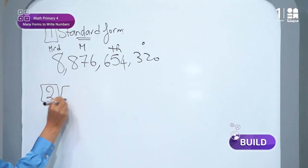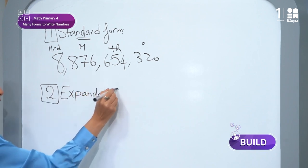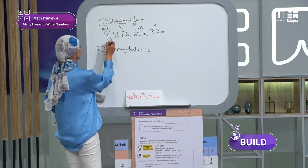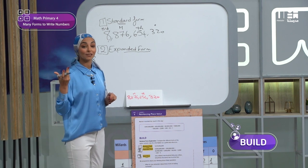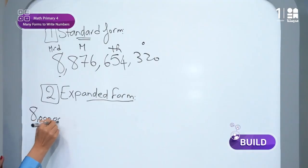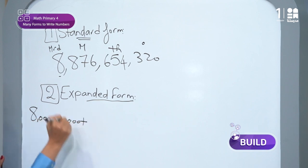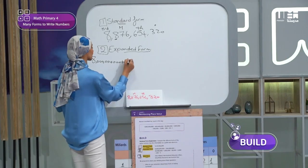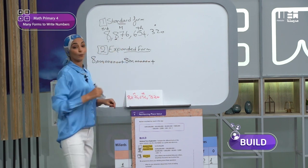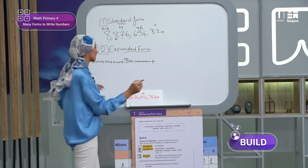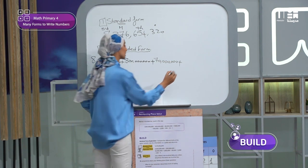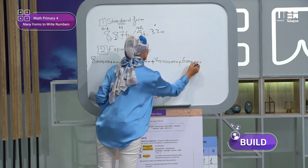Second form is expanded form. How can I write the expanded form? Yes, I will write each digit alone with its value. The first digit, eight milliard, so I will write eight, and beside it, how many zeros? Yes, nine zeros, and don't forget to put the commas. Eight milliard. Super. Then this is eight hundred million. Let's write it. Eight hundred million, يعني eight zeros. Plus seventy million. Seventy, beside it, six zeros. Then six million. Six, and beside it, six zeros, to be six million.